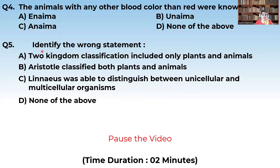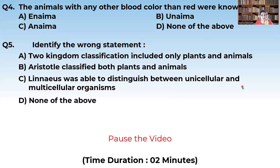Now let us see the fifth question: Identify the wrong statement. Option A: Two Kingdom Classification included only plants and animals. Option B: Aristotle classified both plants and animals. Option C: Linnaeus was able to distinguish between unicellular and multicellular organisms. Aristotle classifying plants and animals is correct. Linnaeus being able to distinguish unicellular and multicellular organisms is wrong. So C is the correct answer.